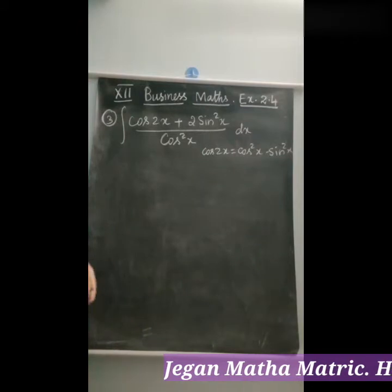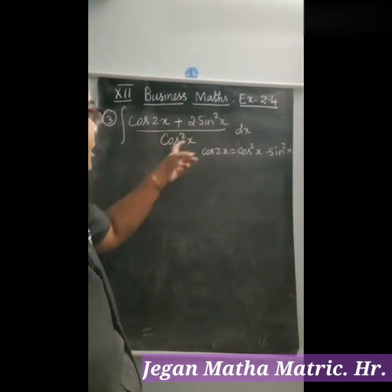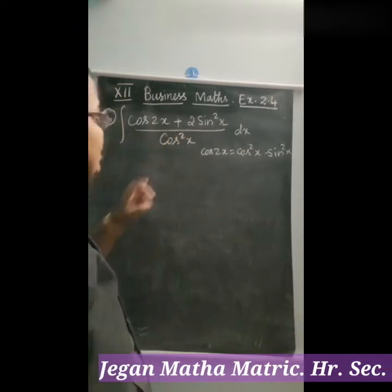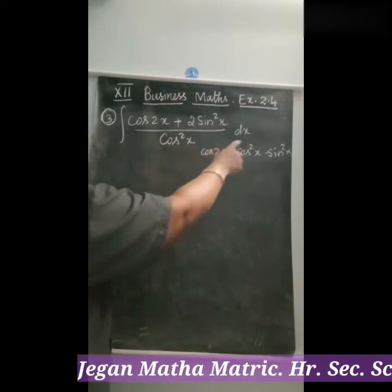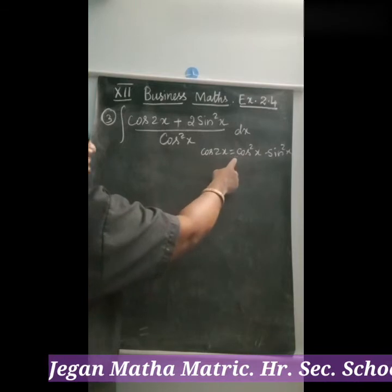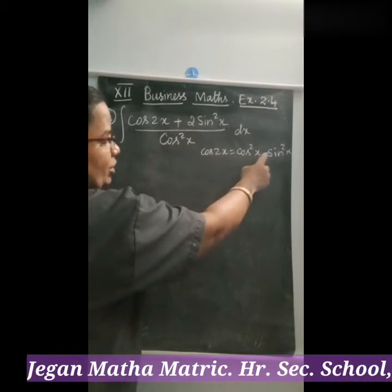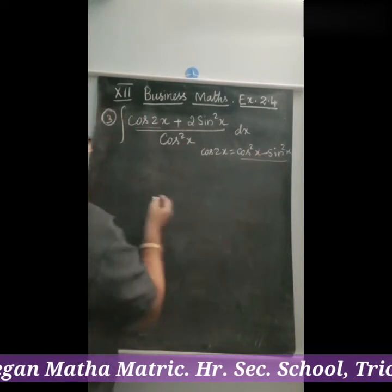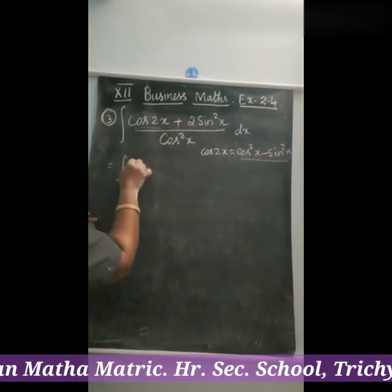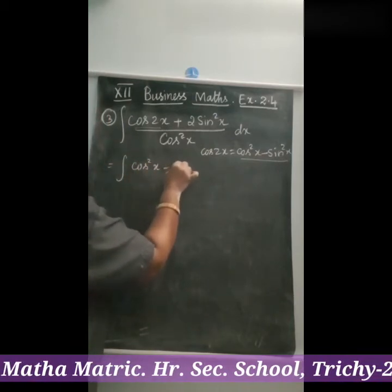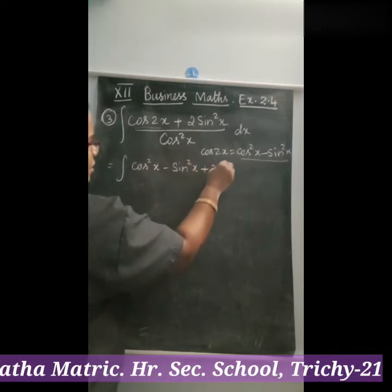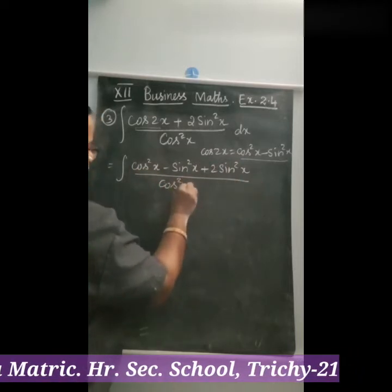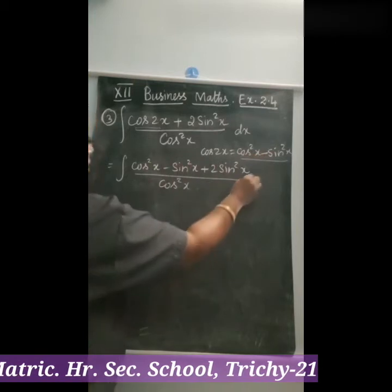Let us see the third question: integrate (cos 2x plus 2 sin²x) divided by cos²x dx. We use the formula cos 2x equals cos²x minus sin²x. Substituting, the numerator becomes cos²x minus sin²x plus 2 sin²x, divided by cos²x dx.